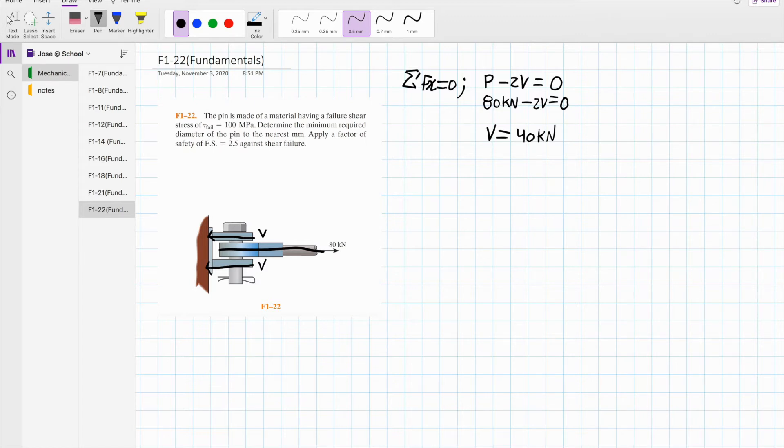Now we apply the equation of shear allow which is given by shear allow equals shear fail divided by the factor of safety. In this case the shear fail is given by 100 MPa and the factor of safety is 2.5 so it is simply just substituting. 100 MPa divided by 2.5 equals 40 MPa.